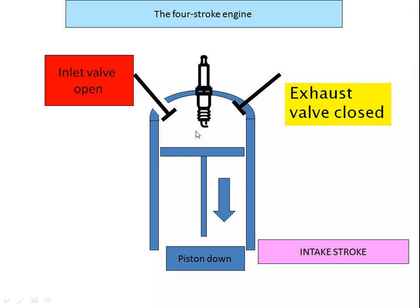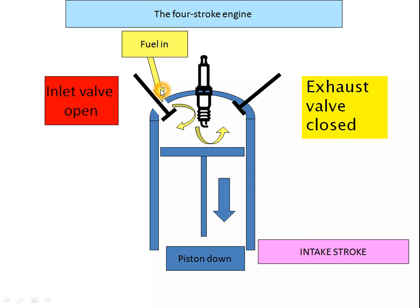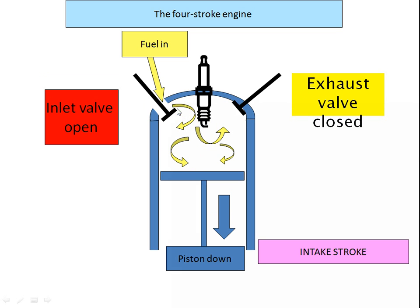In the intake stroke: the inlet valve is shown, along with the exhaust valve. The piston moves downwards and the inlet valve is opened at the intake port. The air and fuel mixture comes into the cylinder and fills it, because the piston moves from top dead center to bottom dead center. That vacuum causes the inlet valve to inject the air and fuel mixture, which continuously enters the engine.